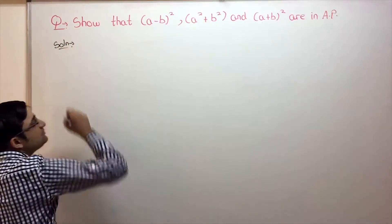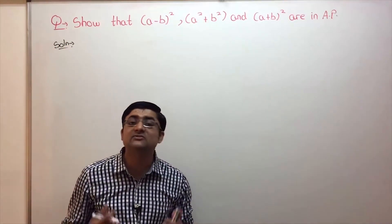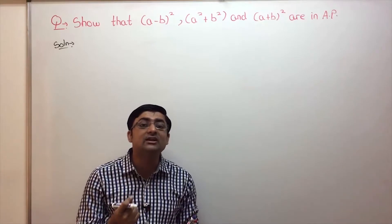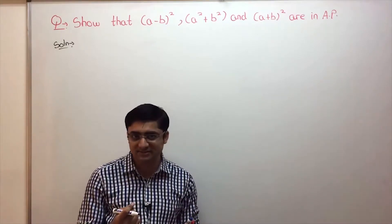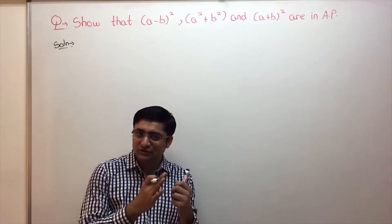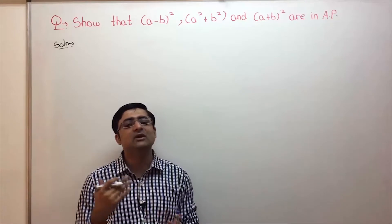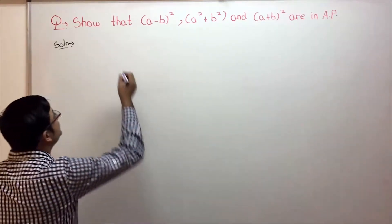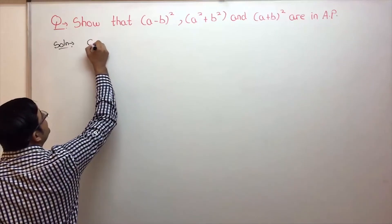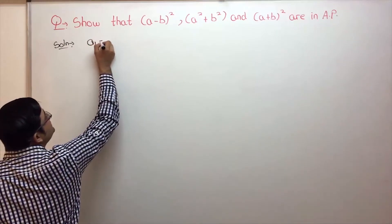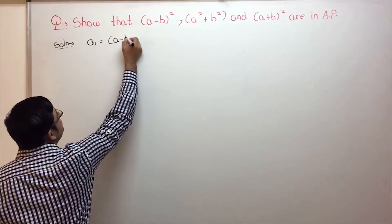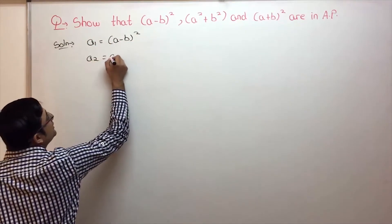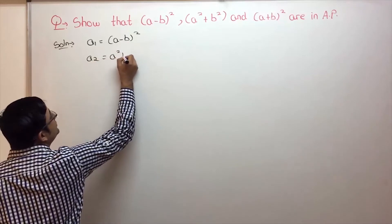How do we show these three terms form an AP? An AP is a special type of sequence in which the difference between any two consecutive terms is the same. So second term minus first term should be equal to third term minus second term — that is the main concept. I'll take the first term as (a - b)² and the second term as a² + b².